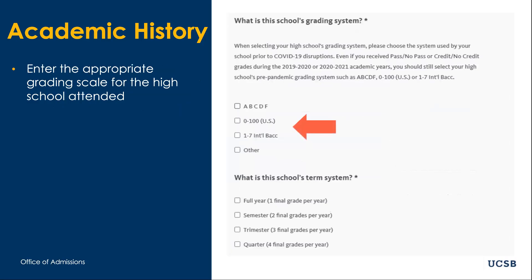The application is then going to ask you about the grading system at your high school, whether you received your marks on an A to F scale or a 0 to 100 scale. If you have an alternate grading system, please do let us know. Finally, you'll check the box next to the appropriate term system, or in other words, how many official grades did your school post on your transcript each year.